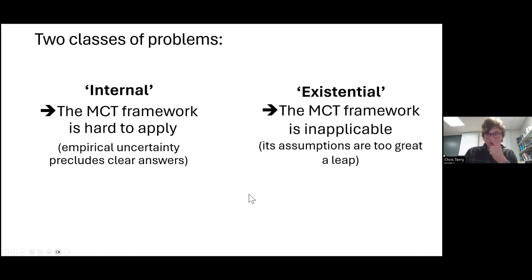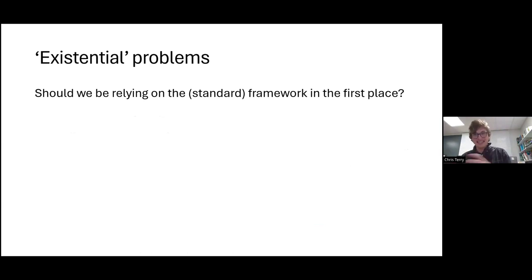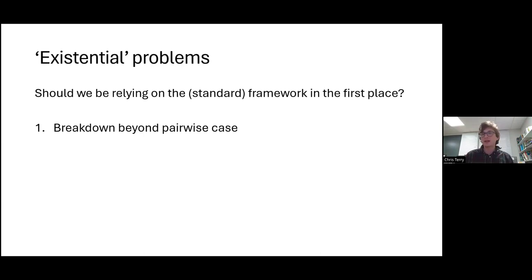Now let's look at the other class of challenges — the existential ones. So far in this talk, we've basically taken modern coexistence theory as representing some sort of golden truth. But there are some serious issues with this. Basic modern coexistence theory is fundamentally pairwise, yet we know species exist in diverse communities. On the optimistic side, both species abundance distributions and network ecology tell us that most interactions are relatively weak with just a few strong interactions that dominate — so for a decent number of species, a simplified representation can actually get us almost all the way.